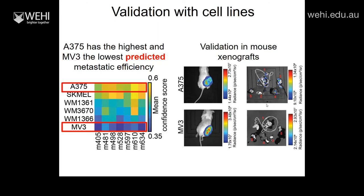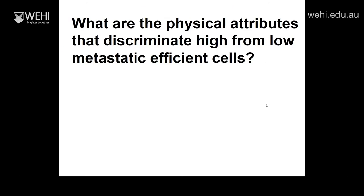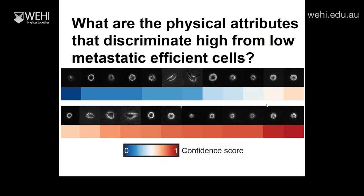The first attempt was pretty simple: extract images of cells, rank them according to what the classifier thought, and stare at them looking for patterns. But staring at many thousands of images, I couldn't see anything with my eyes — because there are many reasons for variability between cells that are not relevant to metastatic efficiency. The variability within the data that is not specific to cell function confounds our ability to capture what's going on.